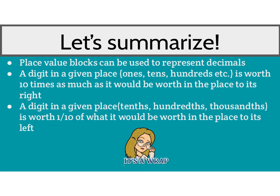Third point: a digit in a given place to the right of the decimal point — tenths, hundredths, thousandths — is worth one-tenth of what it would be worth in the place to its left. So with decimals, the farther you go to the right, the smaller the number. That's the opposite of the whole number part. All right, that's a wrap — see you next time.